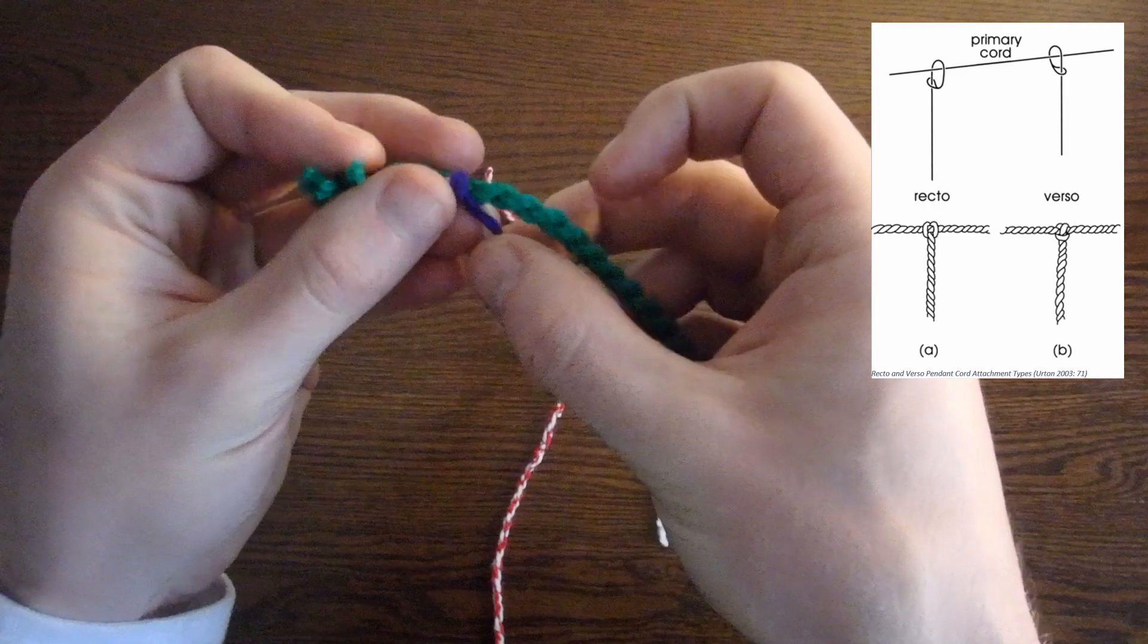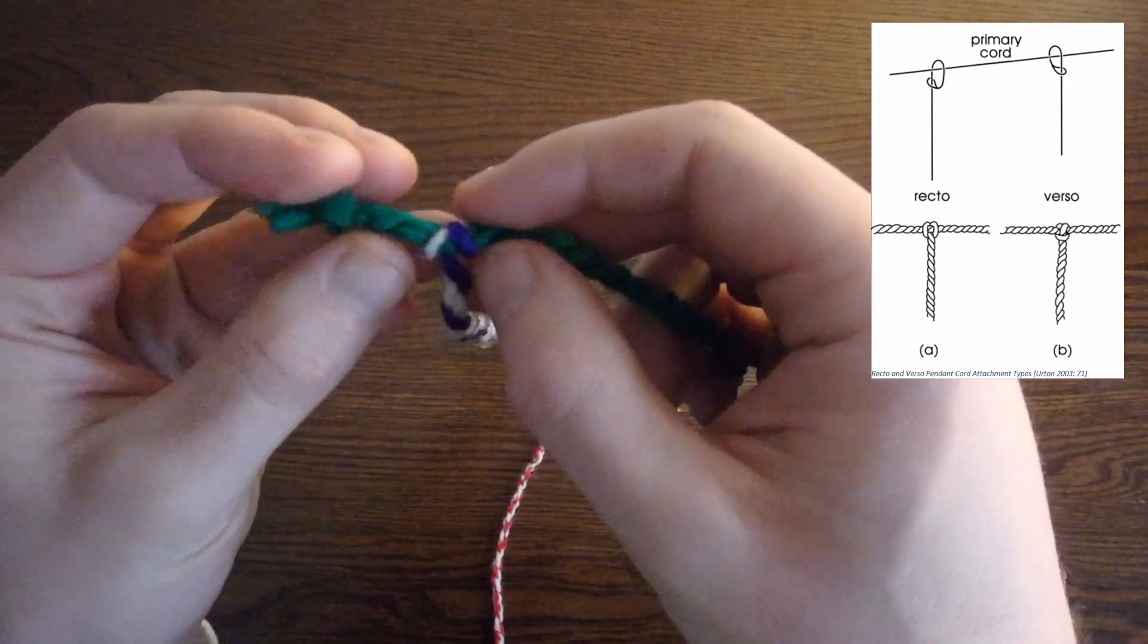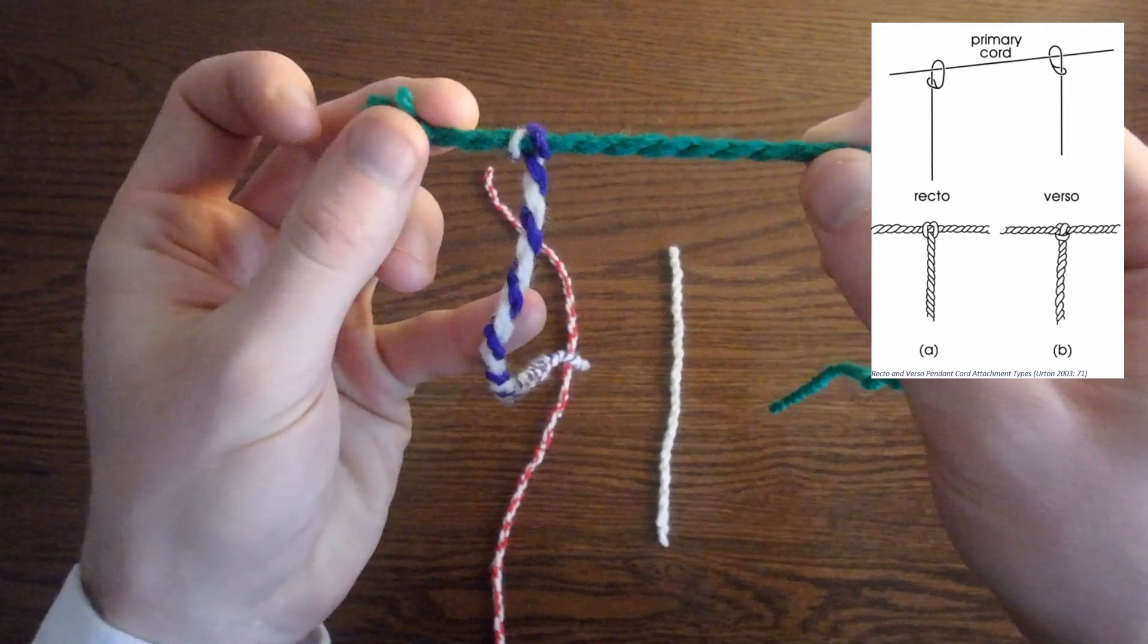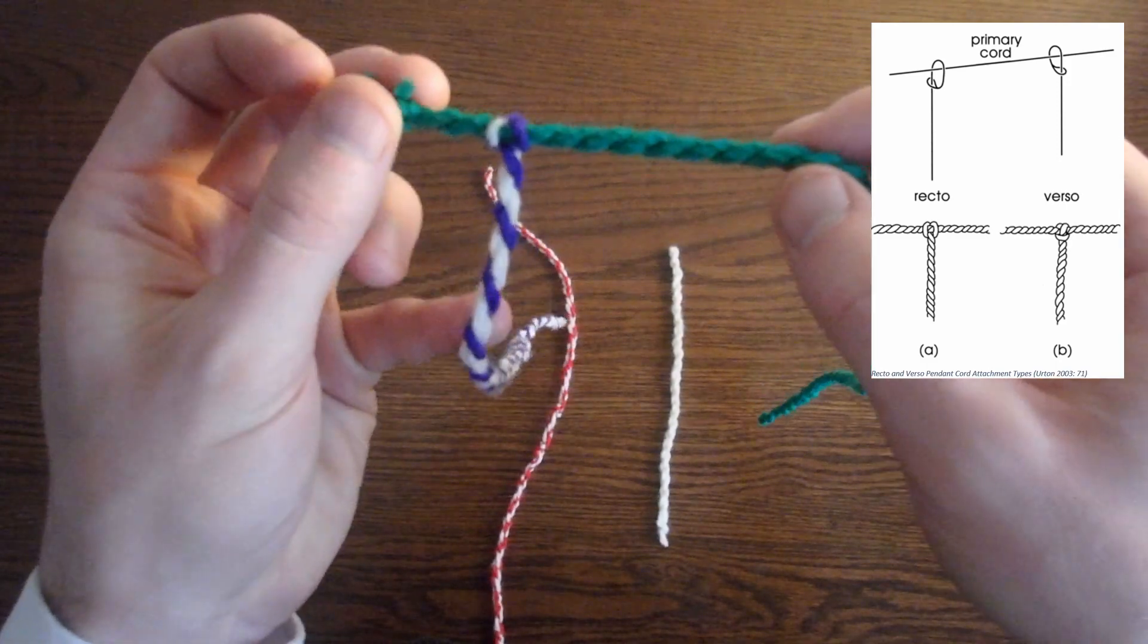You can see now that it's tightened, the loop has been pulled taut against the pendant cord on the other side of the primary cord for me. Thus, it's recto.